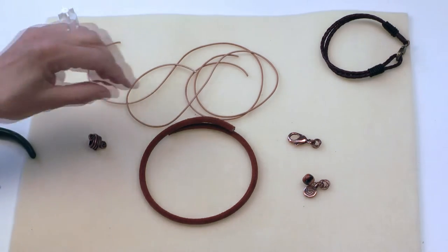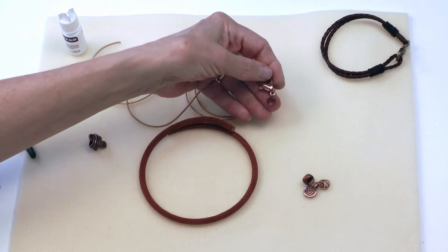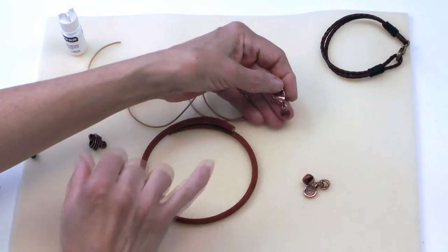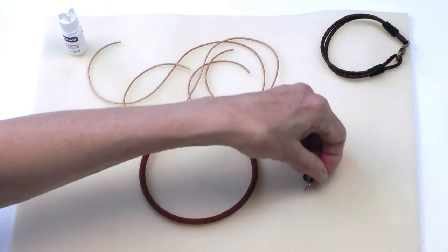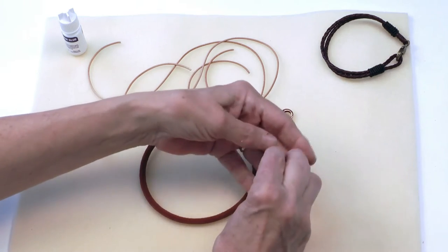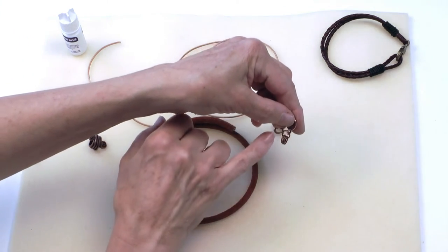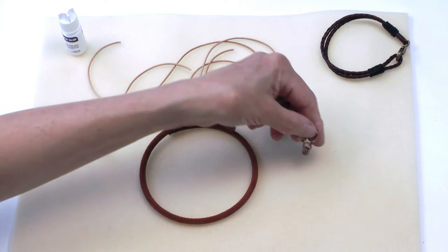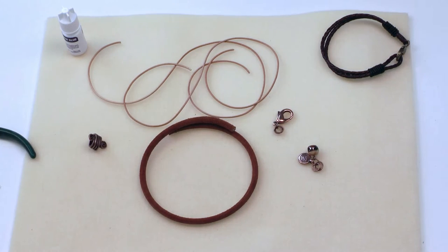For my ending I've got a clasp here and I've already added some eight millimeter jump rings using some six millimeter jump rings. For my other side with the loop I've got three rings attached to one ring, and then I've added a charm and a bead to that. So let's go ahead and get started.